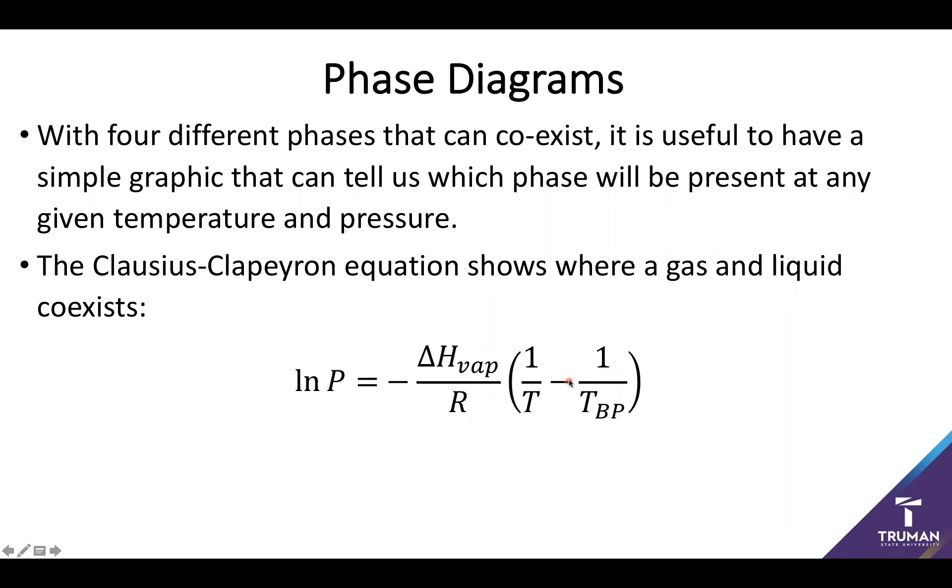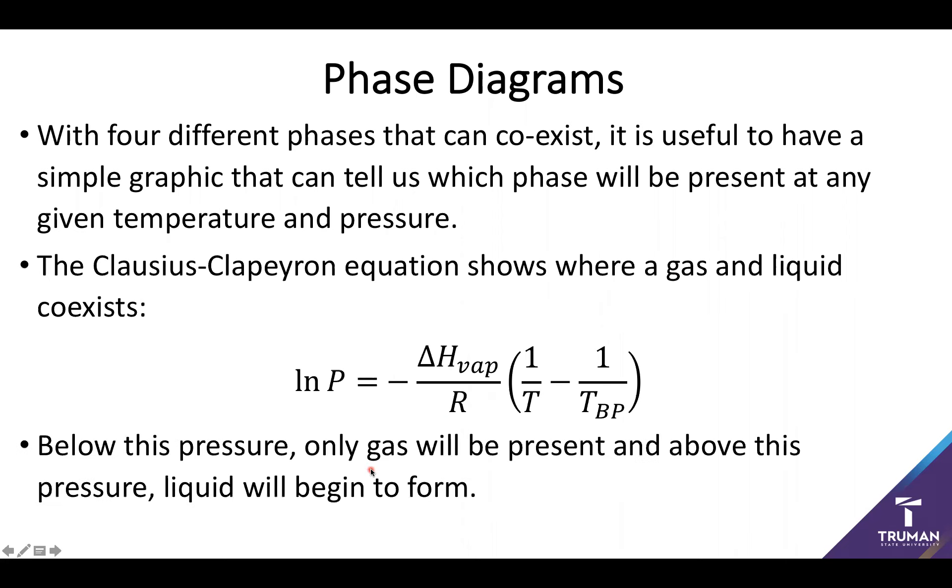All we have right now is essentially a series of equations. For example, I know I can figure out whether I have a liquid or a gas by looking at the Clausius-Clapeyron equation. That will show me essentially what vapor pressure a substance is at at any given temperature. If you're below this pressure then we're only going to have a gas. If you're above this pressure that means I'm going to start forming a liquid because I'll have enough material it will start condensing.